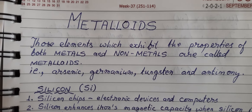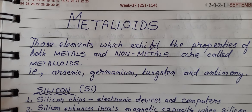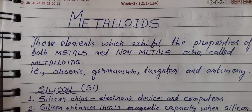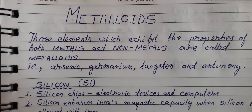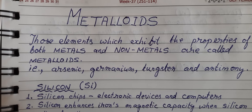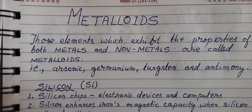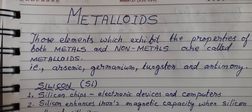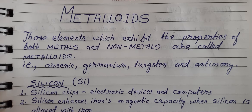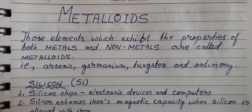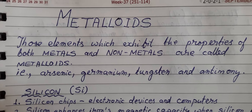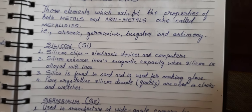Hello class 7. Today in chemistry we will discuss another category of elements, that is metalloids. Metalloids are those elements which fall in both categories, that is metal and non-metal. Those elements which show the properties of both metals and non-metals are called metalloids. Some examples are given over here.